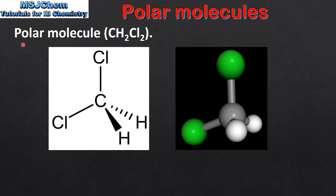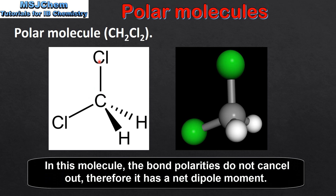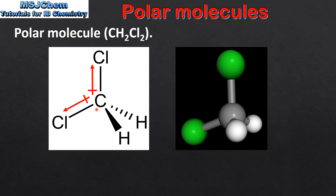Our next example is a polar molecule, which is dichloromethane. Dichloromethane is composed of one carbon atom that's bonded to two chlorine atoms and two hydrogen atoms. If we look at the bond polarities we can see that we have two polar bonds and two non-polar bonds. In this molecule the bond polarities do not cancel out, therefore it has a net dipole moment.